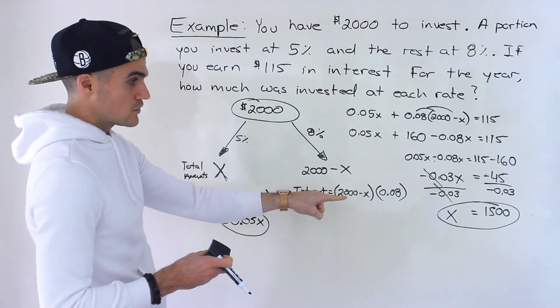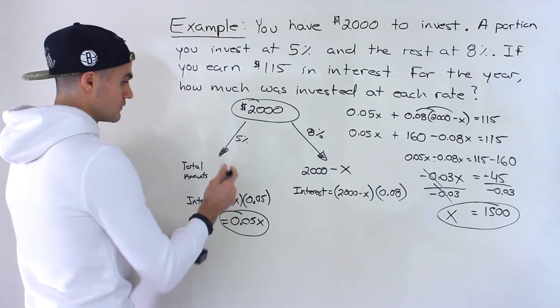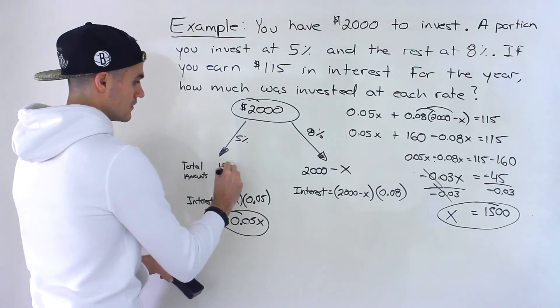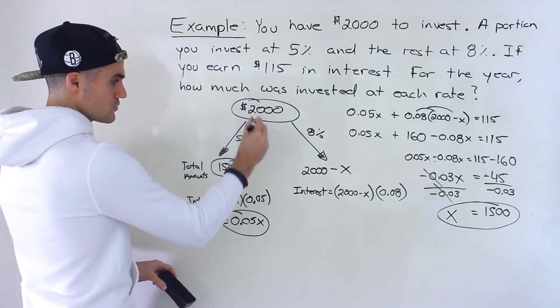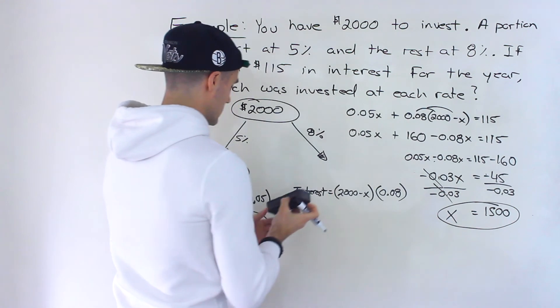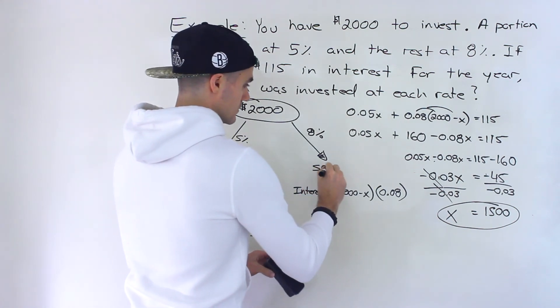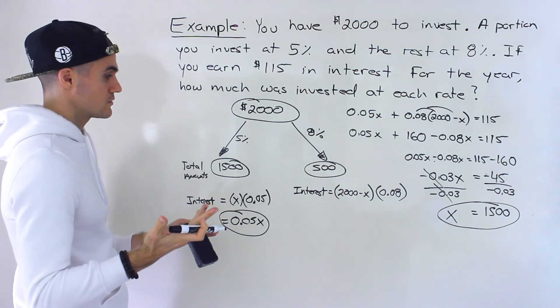So that's the X value. Remember, what did we let the X value be? Well, the amount invested at 5%. And so since we have that, the total was 2,000. How much did we invest at 8%? Well, we invested 500 at 8%. And those are the solutions.